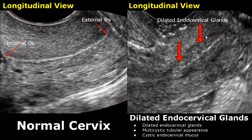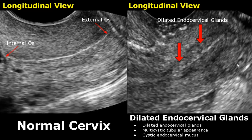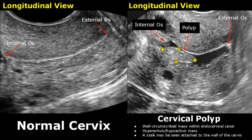Dilated endocervical glands will have a multicystic tubular appearance, also called cystic endocervical mucus — you can see a difference in appearance of the cervical canal. A cervical polyp refers to a well-defined circumscribed mass within the endocervical canal, attached to the wall of the cervix with a stalk that is hard to see on ultrasound. This mass can appear hyperechoic or hypoechoic, but mostly it is hyperechoic to the myometrium.